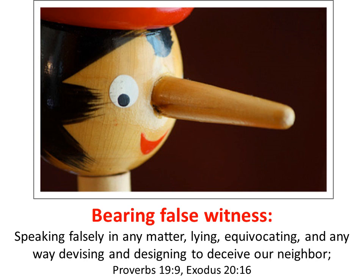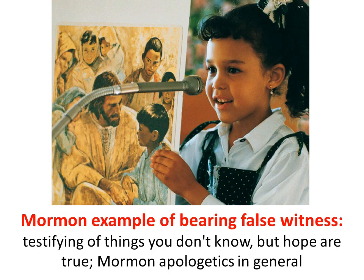Bearing false witness — speaking falsely in any matter, lying, equivocating, in any way devising and designing to deceive our neighbor. Proverbs 19:9, Exodus 20:16. We have a few examples of Mormons bearing false witness: one is when little kids who can't even read or write get up and bear their testimony, testifying of things they don't know but hope are true — and that could even apply to adults. Things you don't know, things you really haven't researched, but you just hope they're true — that is bearing false witness. Also, Mormon apologetics in general like to really stretch the truth, mislead people, and I would even say lie.